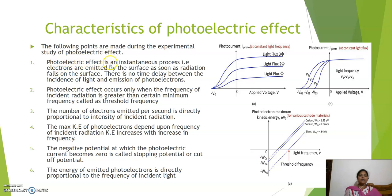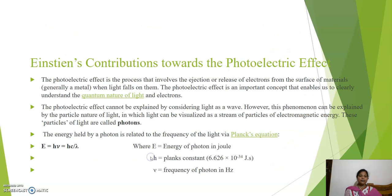These are the characteristics of the photoelectric effect. First, the photoelectric effect is an instantaneous process — there is no time delay between the incident light and the emitted photoelectron; electrons are emitted as soon as radiation falls on the surface. Second, it occurs only when the frequency of incident radiation is greater than the threshold frequency. Third, the number of electrons emitted per second is directly proportional to the intensity of incident radiation. Fourth, the maximum kinetic energy of the photoelectrons depends on the frequency of incident radiation. Fifth, the negative potential at which photocurrent becomes zero is called stopping potential or cutoff potential. Sixth, the energy of the emitted photoelectron is directly proportional to the frequency of incident light.